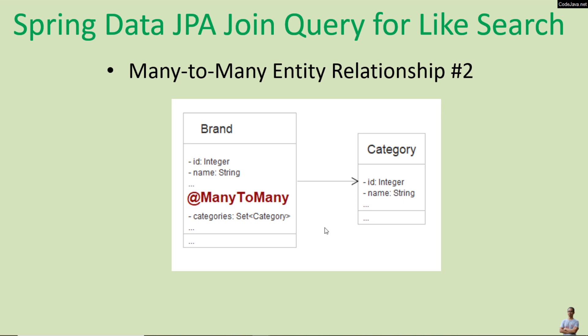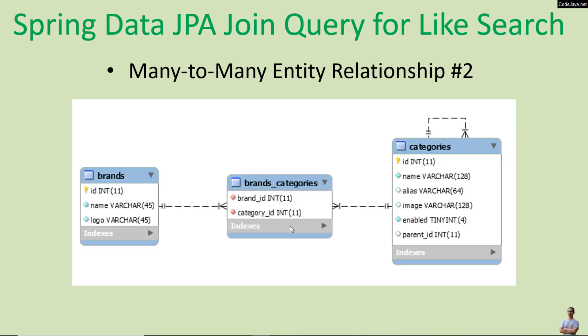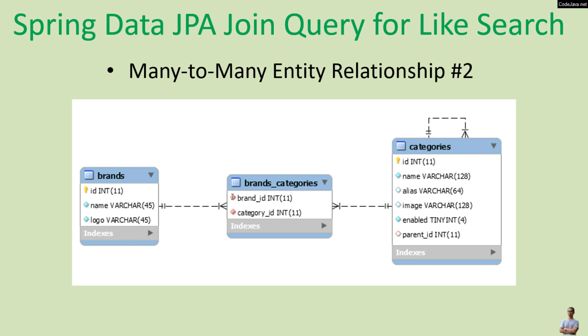Next, let's see another example of Spring Data JPA join query for like search on a many-to-many entity relationship between brand and category. A brand belongs to one or more categories and a category consists of one or more brands. It is represented by the categories set collection in the brand entity class. In the database, it is implemented by having an intermediate table brand_categories, with the first foreign key referring to the primary key of the brands table and the second referring to the primary key of the categories table.